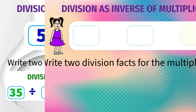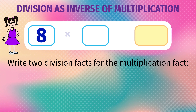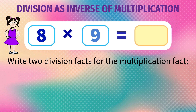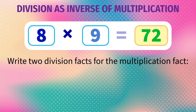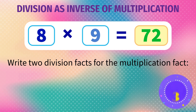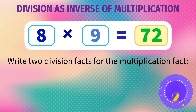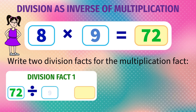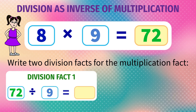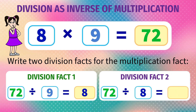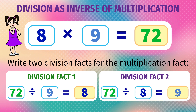Write two division facts for 8 into 9 equals 72. Here, the two division facts are 72 divided by 9 is 8, and 72 divided by 8 is 9.